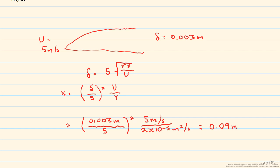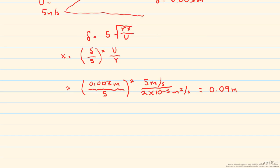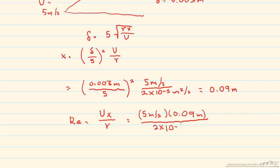Now we have to check the Reynolds number to make sure it's laminar, otherwise use of this particular solution is incorrect. Our Reynolds number equals U times x that we just found divided by the kinematic viscosity. That's 5 meters per second times 0.09 meters divided by 2 times 10 to the minus 5 meters squared per second, and so our Reynolds number is 22,500.